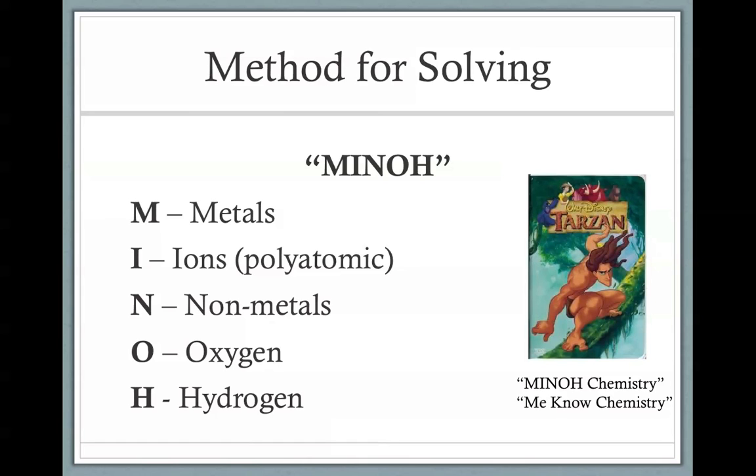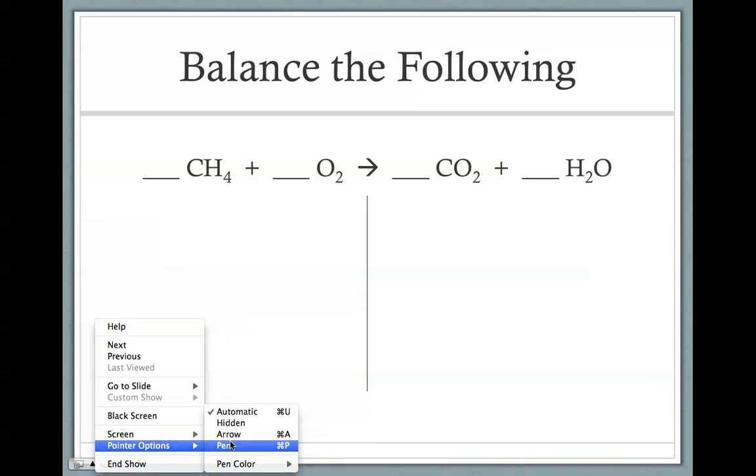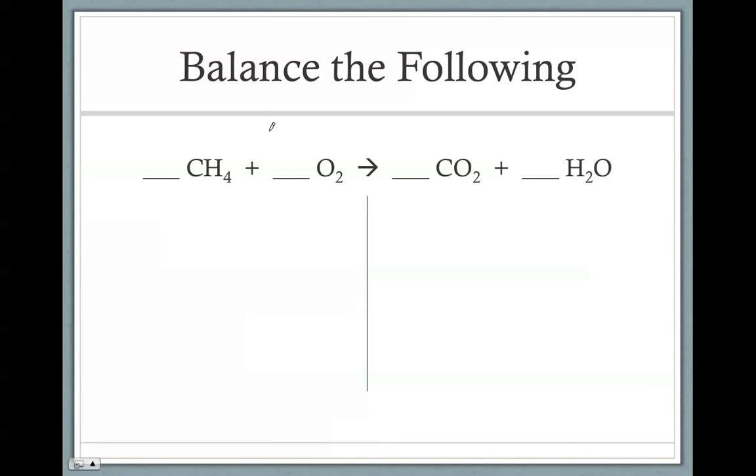You start off with metals. You then balance out any polyatomic ions. If anything's left to be balanced, you work with the non-metals before moving on to oxygen and hydrogen. So we're going to go through a couple of these examples. The big thing is, is that I'm going to show you the strategy where we're going to be tallying and writing stuff below it. It's just a way for many students to organize their information.